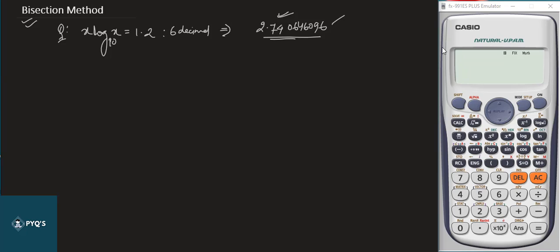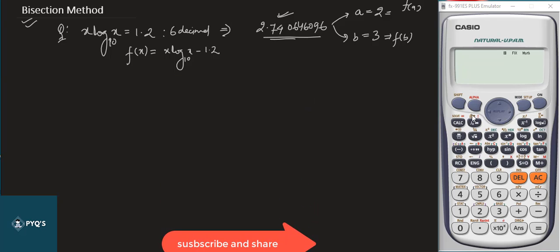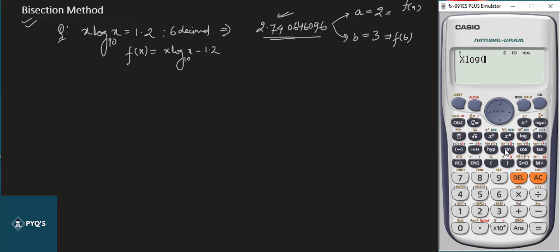Now we assume two initial values: let A = 2 and B = 3, since the root lies between them at approximately 2.74. We define f(x) = x·log₁₀(x) − 1.2. In the calculator, we type this equation using x, log, Alpha x, then minus 1.2. Press CALC and enter x = 2.